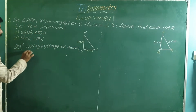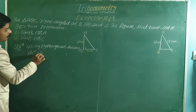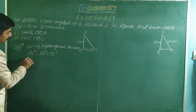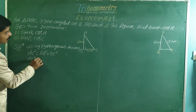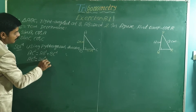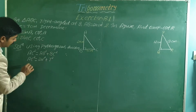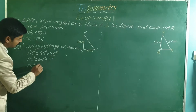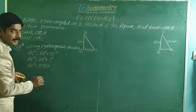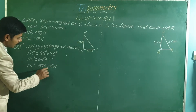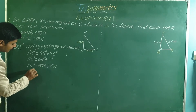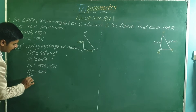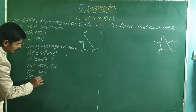Using the Pythagoras theorem, the hypotenuse square is equal to the sum of the squares of the other two sides. So AC squared is equal to AB squared plus BC squared, which is 24 squared plus 7 squared. 24 squared is 576, 7 squared is 49. 576 plus 49 gives 625. So AC is equal to the square root of 625, which is 25 cm.